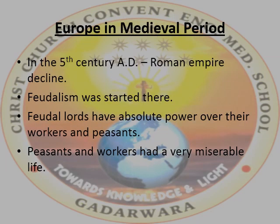Europe in the medieval period: In the 5th century AD, with the decline of the powerful Roman Empire in Europe, the medieval period began. There was a rise of the feudal system. The word feudalism comes from the Latin word 'feudum,' which means a piece of land granted in return for services. The people who acquired such lands were known as feudal lords, and they were responsible for the security of their feudum. The feudal lords had absolute power over their peasants and workers, lived a luxurious life, and treated the peasants very badly.